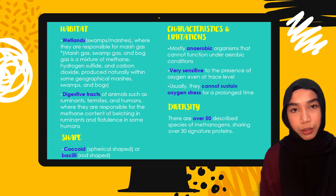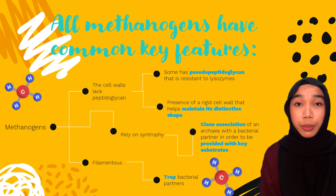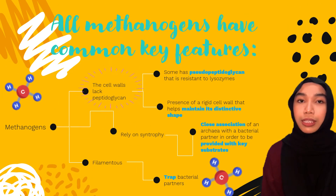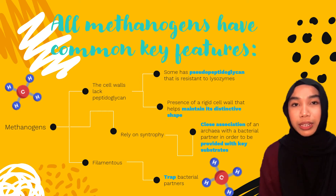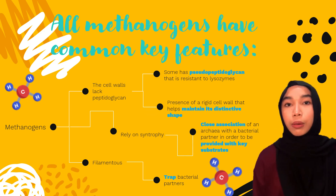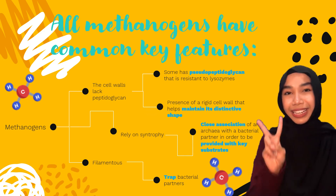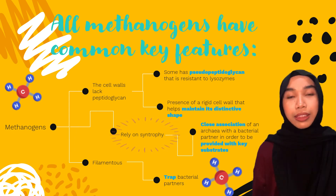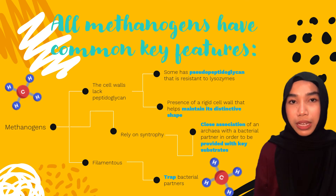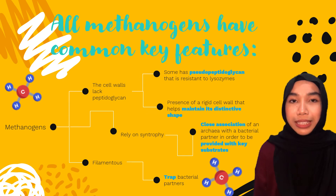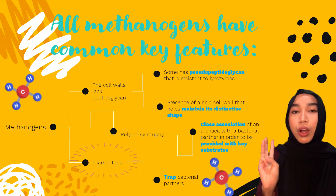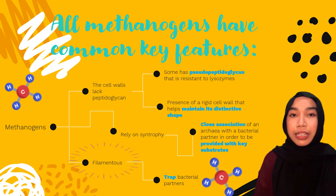Even though there are so many species of methanogens, they all have a few common key features. First, the cell wall of methanogens lacks peptidoglycan, just like any other archaea, and sometimes they have pseudopeptidoglycan instead, which is resistant to the enzyme lysozyme, and they have a rigid cell wall that helps maintain shape. Second, every methanogen relies on syntrophy — a close association of an archaea to a bacterial partner to obtain key substrates. Third, all methanogens are inventors, meaning they have filaments to help trap their bacterial partners.